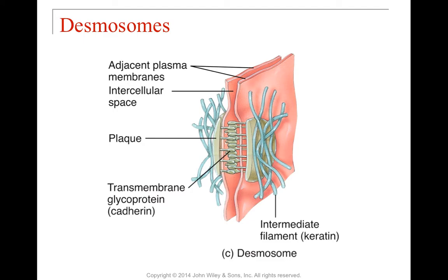Desmosomes are kind of like snaps. They're going to be regions where we still have that cadherin — which is our adhesion — but instead of having that long belt, we just have a little dot of it, whereby one cell connects to the other cell by way of cadherins, which are transmembrane. They connect into plaques, which then connect into the cytoskeleton directly by the keratin, which is the intermediate filament. That's called a desmosome.